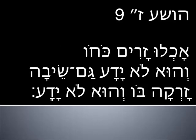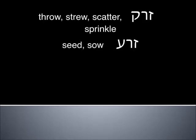Verse 9 — there's a lot he doesn't know. 'Lo yada.' First — 'achlu zarim' — strangers and foreigners have eaten his koach, his strength. He doesn't know it. 'Gam seva' — related to old age and gray hair. The idiom is 'Seva zarak bo' — gray hairs are sprinkled around him. Let's explore zarak. In Shemot 9:8, Moses takes a full handful of piach — ashes — from the kivshan, the furnace, and throws them toward the heavens in the eyes of Pharaoh. After the ashes go up, boils come down.